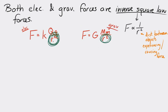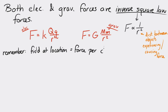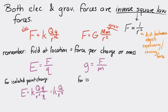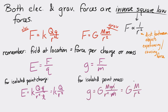Remember, the field at a location is the force per charge or force per mass. So for an isolated point charge, the electric field is given by E = kq/r², and for an isolated point mass, the gravitational field strength is given by g = Gm/r². Note that these equations only apply for an isolated point charge or point mass — if you have multiple charges or masses, it takes a bit more effort.